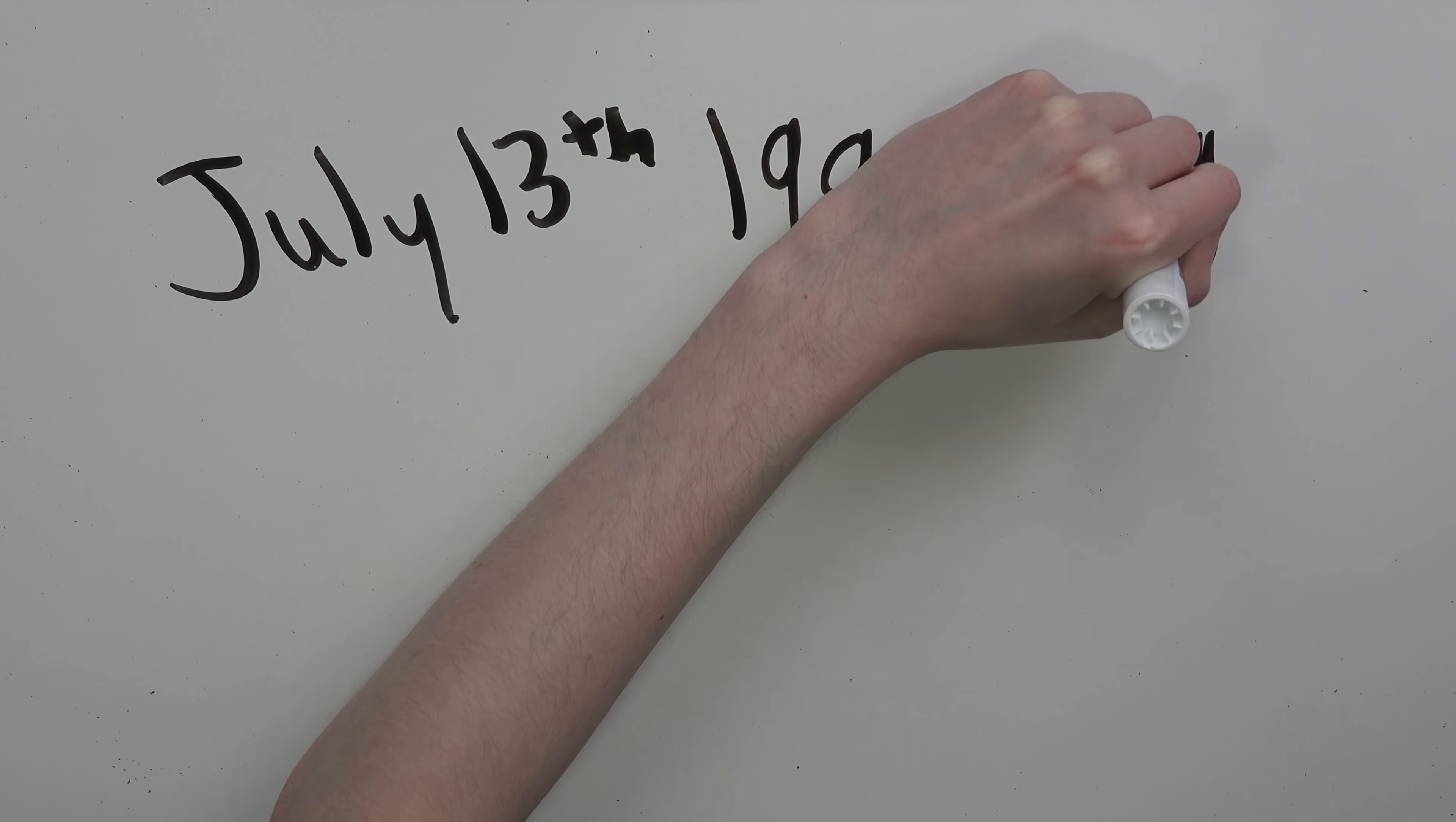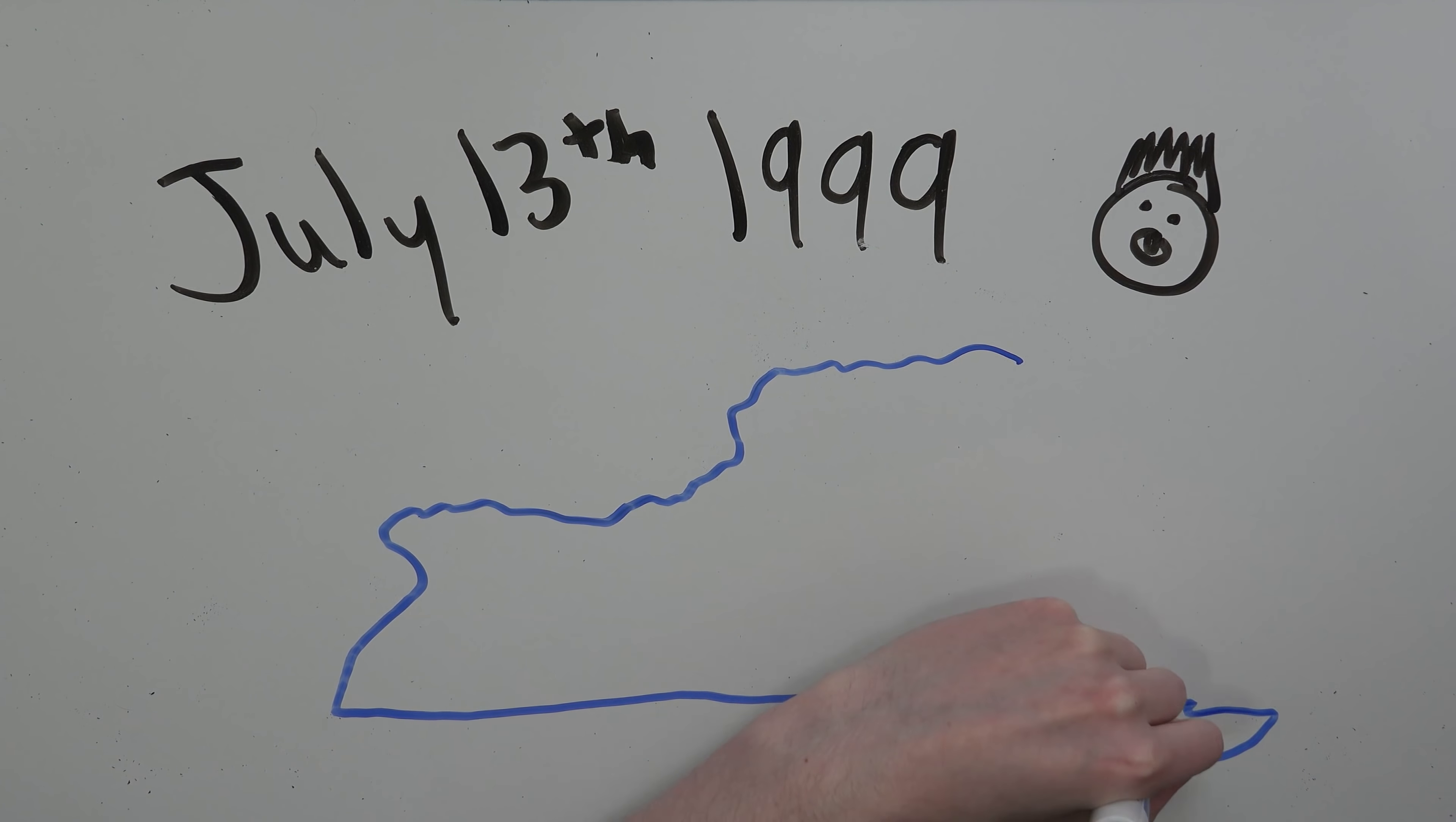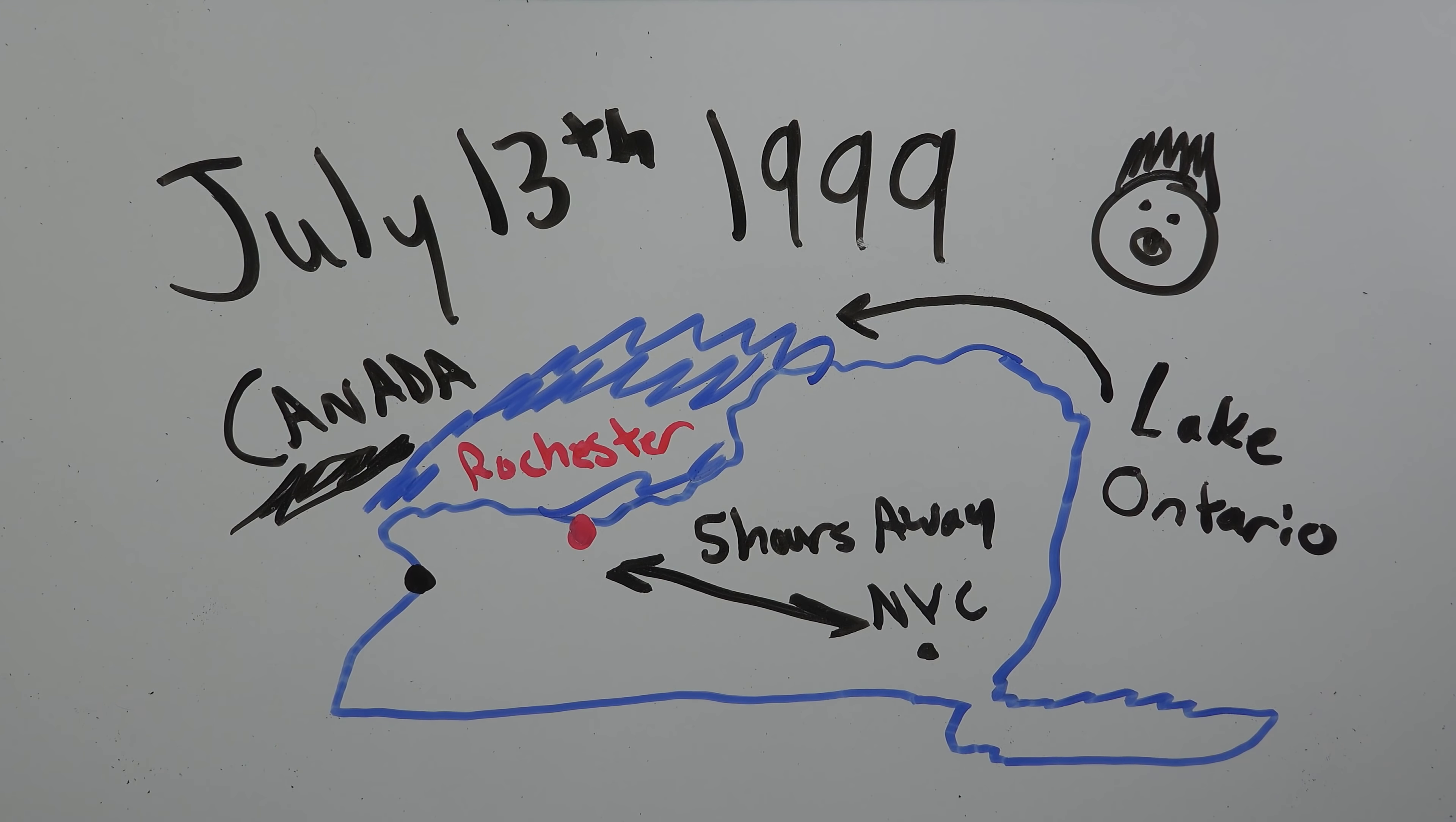It all started on July 13th, 1999. I was born in Rochester, New York, which is located in western New York about an hour from the Canadian border. The city of Rochester is right on the banks of Lake Ontario, one of the five great lakes. Despite what people think, Rochester is not very close to New York City. It's about five hours away, but I'll talk more about my hometown in a little bit.